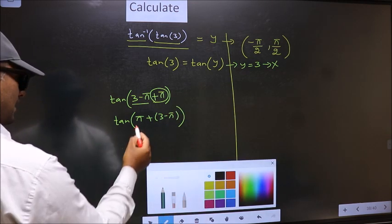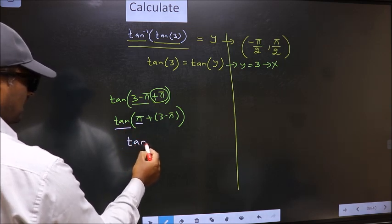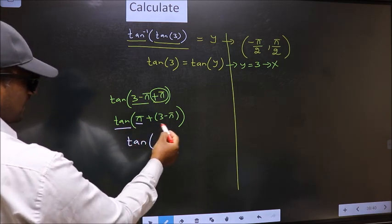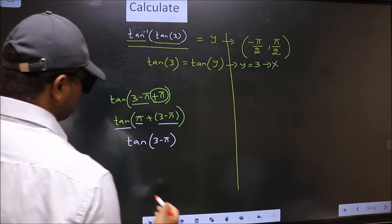Here we have pi, so tan is not going to change. It will remain tan. And inside we get this angle 3 minus pi. Now the question is, will we get here plus or minus?